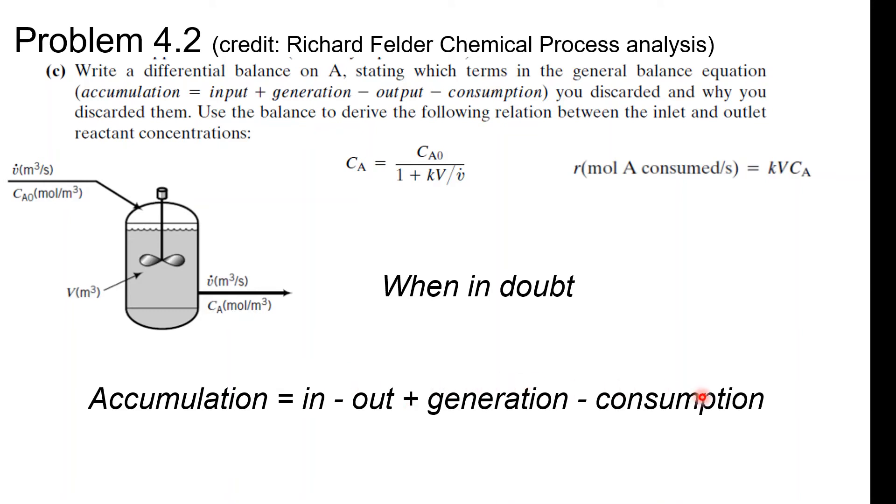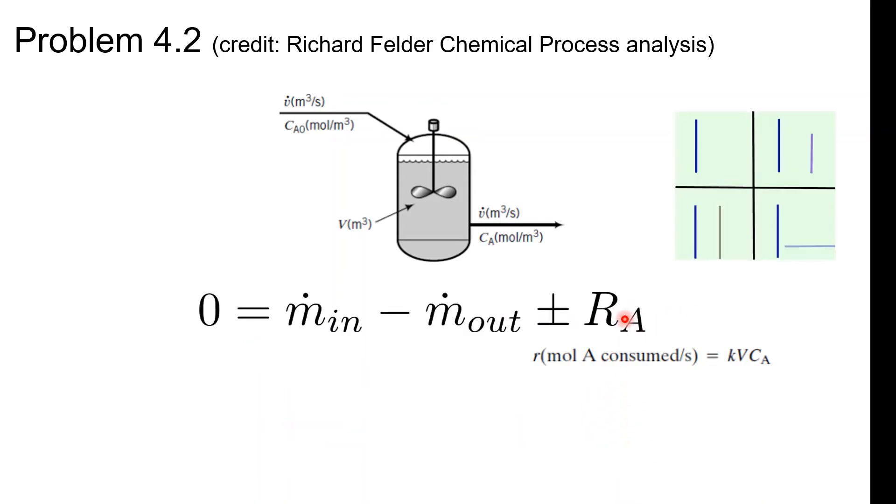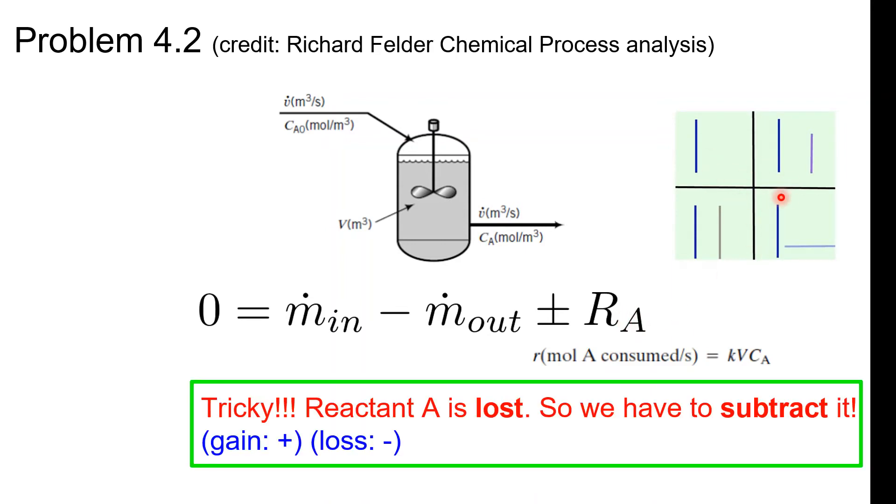In minus out - we have in and we have out. What about generation and consumption? When in doubt, accumulation equals in minus out. We can convert the generation and consumption into plus or minus reaction. Here's our system, here's our reaction term. Is this loss or is this gain? This is a little bit tricky for me. I was like, is it positive because it's being converted? Is it negative? Just write this down. If it's gain, it's positive. If it's loss, it's negative. That's not a happy face by the way, loss is negative.